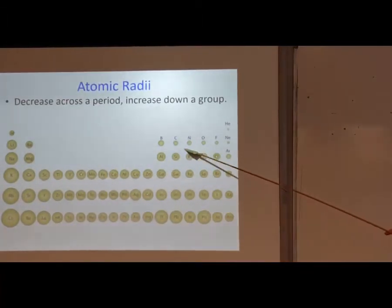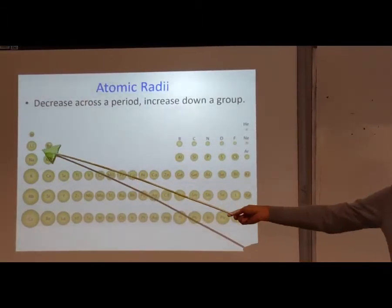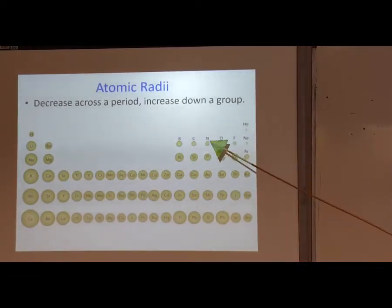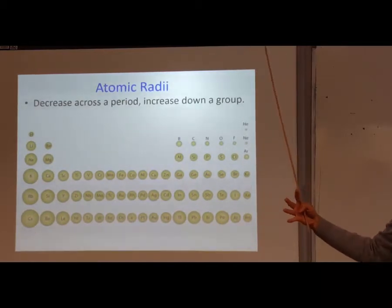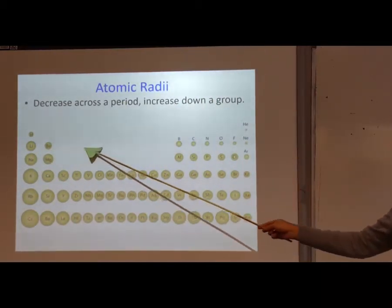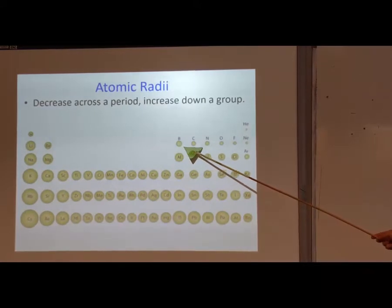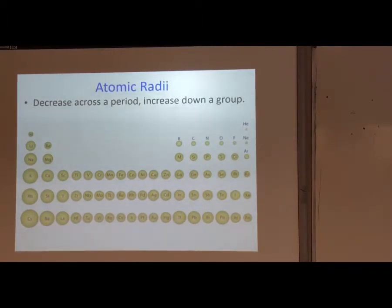Why does it get smaller as it goes across a period? Because it's the same shell — they're all the same distance — but the nucleus is getting more and more positive, so the electrons on the outside are getting pulled closer and closer in, like gravity. That's why they get smaller across the period and larger going down. That's atomic radius.